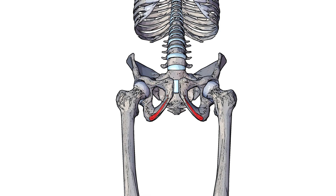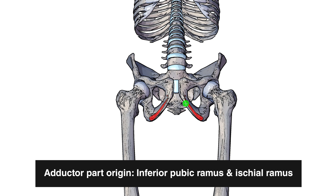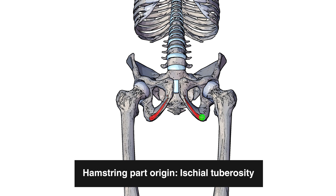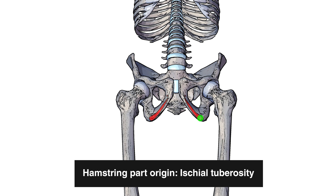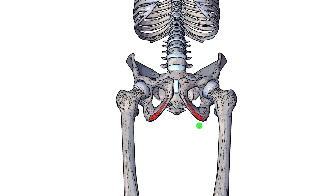Moving on to the origin next, you can see we've swapped over to an anterior view and we're looking slightly upwards at the skeleton as well. You can see the origin marked out here in red. The adductor portion is going to be originating from the inferior pubic ramus and the ischial ramus, whereas the hamstring portion is going to be originating from the ischial tuberosity. That's because the hamstring portion's muscle fibres are more vertically aligned, coming down from the ischial tuberosity, whereas the adductor portion fibres are more horizontally aligned, coming across to connect onto the femur.